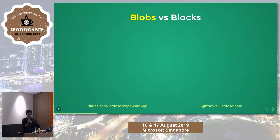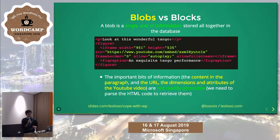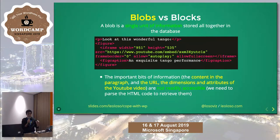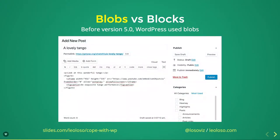Let's talk about blobs versus blocks. A blob is a single unit of information stored all together in the database. With a piece of HTML code, the important bits — like paragraph content and YouTube video URL and dimensions — can't be accessed directly; they're not metadata. To extract this information, you need to parse the HTML, which is expensive. Back in the day, until WordPress 5.0, working with TinyMCE, the content editor, was a blob — not easily accessible.